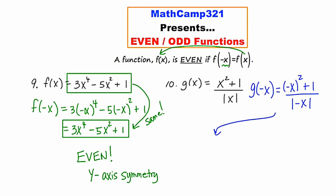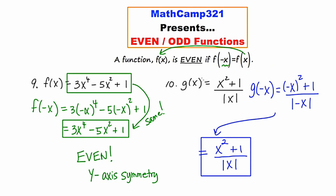I've essentially replaced every occurrence of x with negative x, and now I'm going to evaluate each of these expressions, starting with the top. Negative x squared is negative x times negative x, which is x squared. The plus one I'm just going to rewrite. And the absolute value of negative x is just x, which I can write as the absolute value of x. So what we notice is that what I have is exactly the same as the original function.